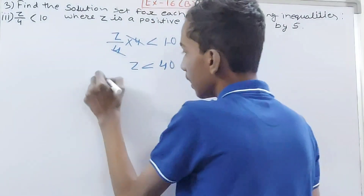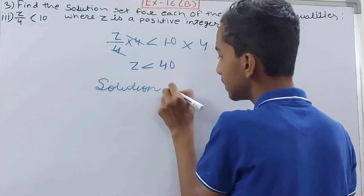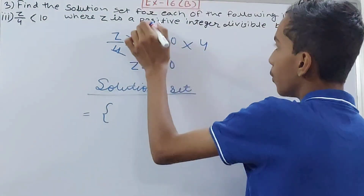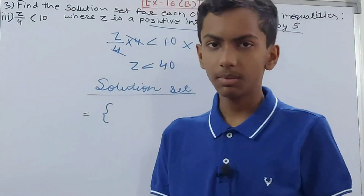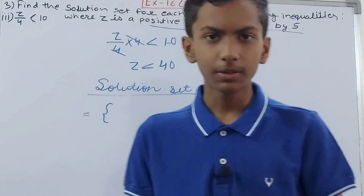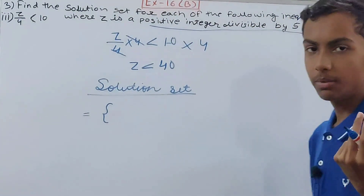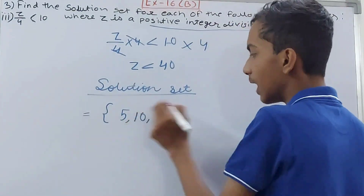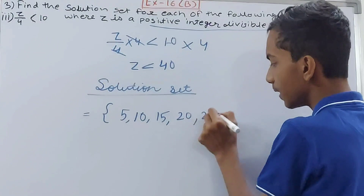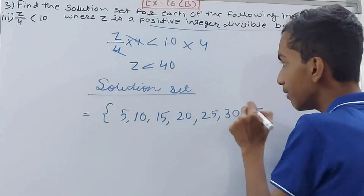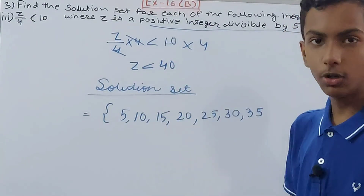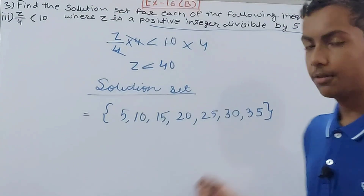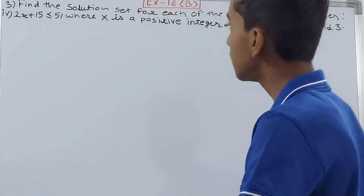Now the solution set: the condition is that z is a positive integer divisible by 5. Positive integers divisible by 5 are 5, 10, 15, 20, 25, 30, 35, 40... but we cannot take 40 because z must be strictly less than 40. So the solution set is {5, 10, 15, 20, 25, 30, 35}.